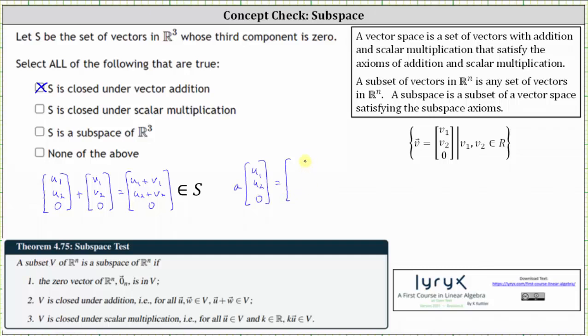Performing the scalar multiplication, the first component is A times U sub one. The second component is A times U sub two. The third component is A times zero, which is zero. The result is a vector in R³, where the third component is zero, verifying S is closed under scalar multiplication.